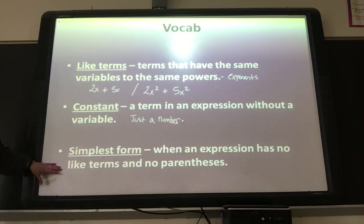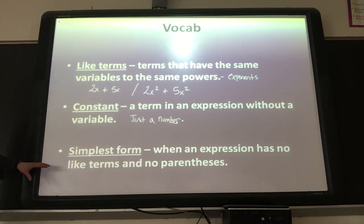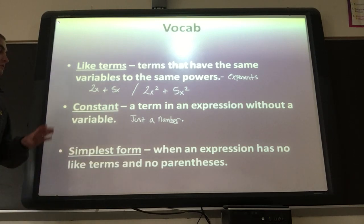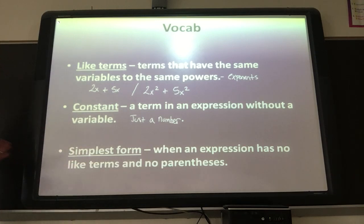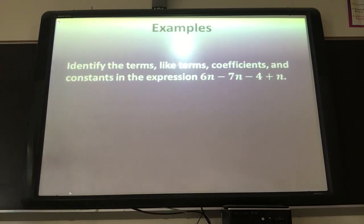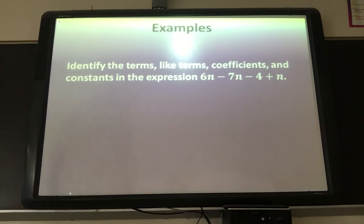Our goal is to get these expressions into simplest form. Simplest form is when an expression has no like terms and no more parentheses. That's going to be our goal. The first type of example we're going to do is identify all the different things we can see in an expression.